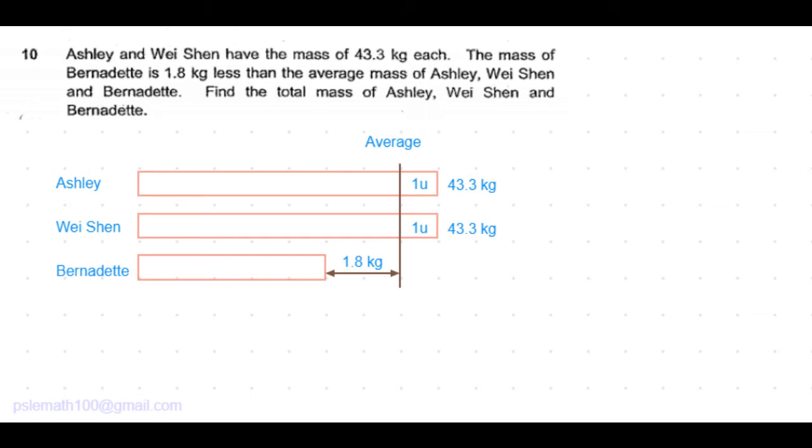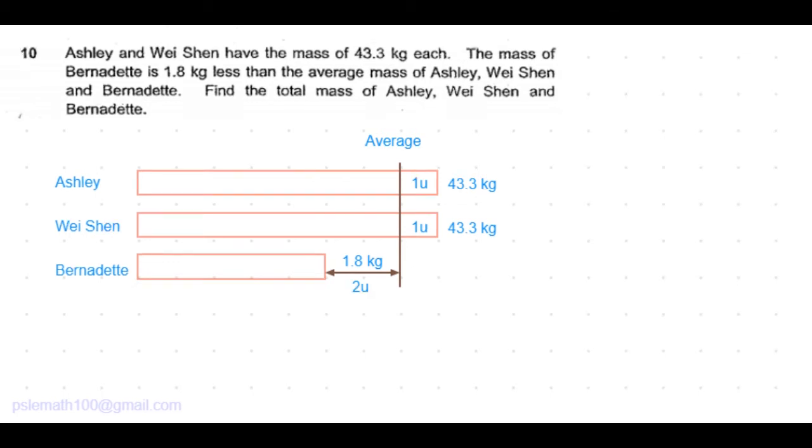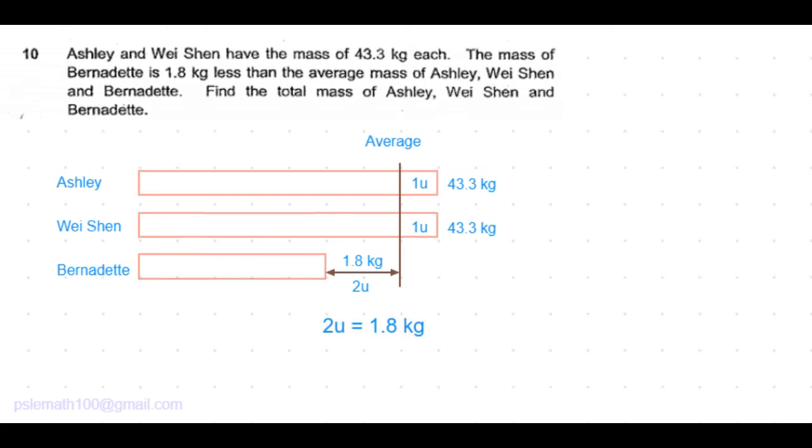Now, sum of Ashley, Wei Shen and Bernadette's mass is equal to the total, and three times the average is also equal to the total. The mass of Bernadette, which is less than the average, is compensated by the mass of Ashley and Wei Shen equally, which are more than the average. This means sum of the masses which are more than the average will be equal to sum of the masses which are less than the average, which means 1.8 kilograms is the same as the 2 units.